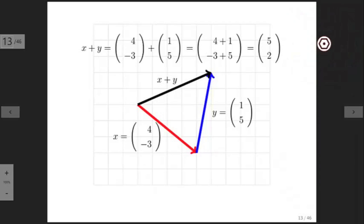Now how does this work? If you focus on the first component of x and y, notice that this here is the first component of x, it's 4. This here is the first component of y, it's 1. And notice that the vector x plus y goes across 5 units.